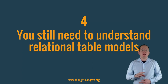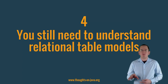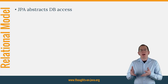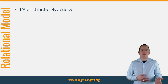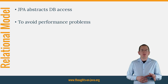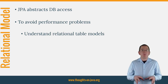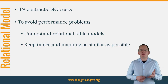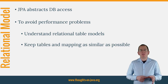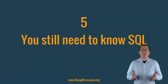The fourth thing you need to know about JPA is that you still need to understand relational table models. JPA abstracts the database access and hides it behind a set of annotations and interfaces. But that doesn't mean that you can ignore your database. Even though you don't interact directly with your table model, you still need to understand the capabilities and limitations of relational table models. Ignoring them is one of the most common mistakes that cause severe performance problems. You should therefore make sure that your entities are as similar as possible to the database table they map. This ensures that your persistence provider can provide a fast and efficient object-relational mapping.